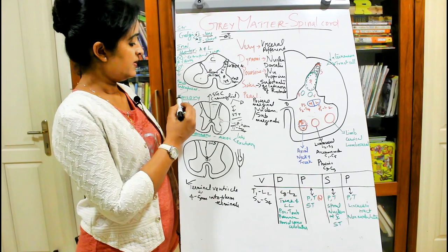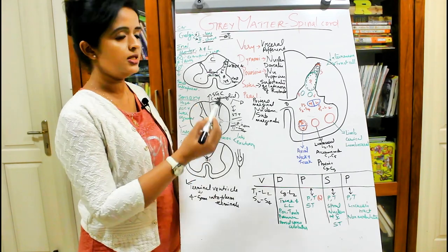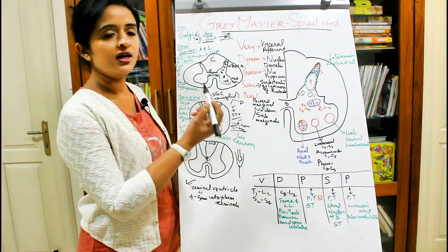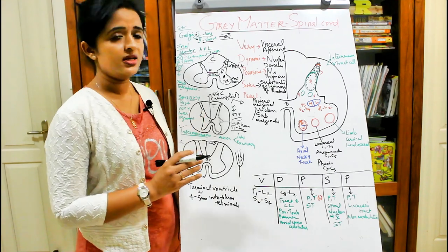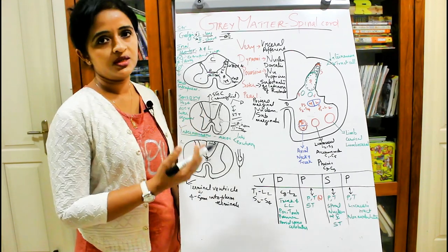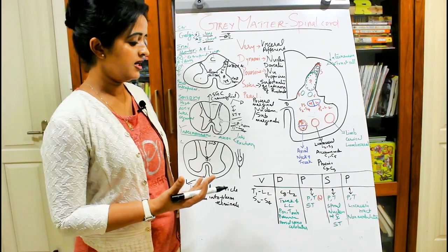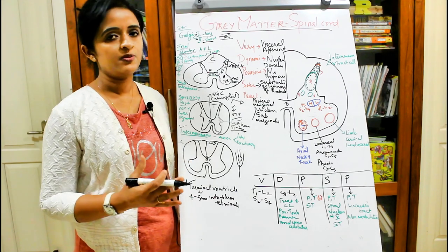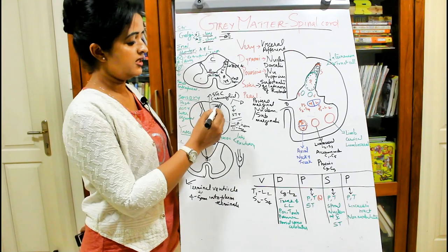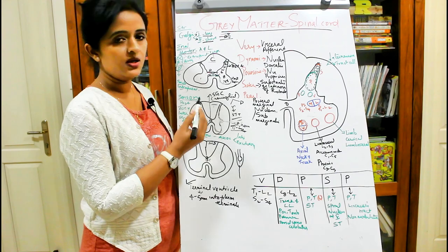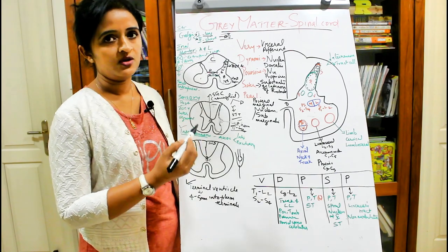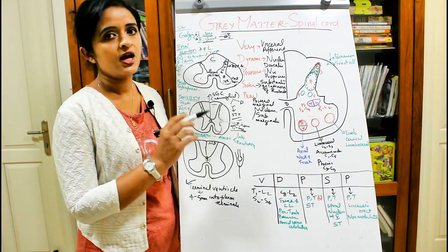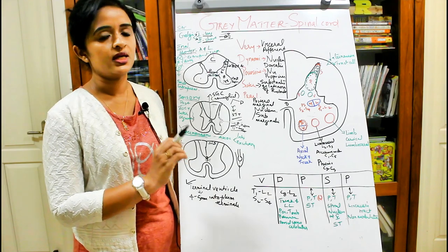Coming to sensory neurons: they are concentrated in the posterior horn of the gray matter. They are also known as association neurons or intersegmental neurons. These neurons give rise to the ascending tracts and intersegmental tracts within the spinal cord. This is a very important point — the axons of posterior horn neurons give rise to the ascending tracts and intersegmental tracts.